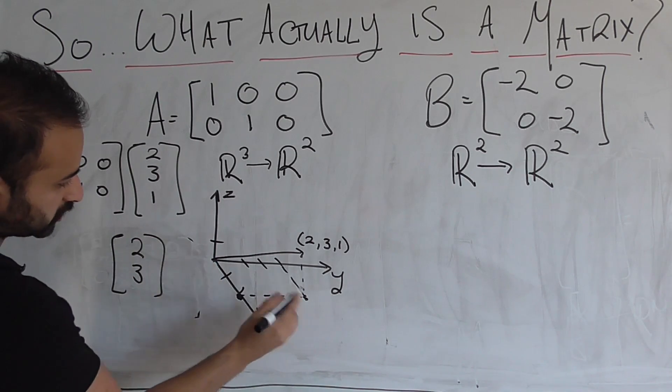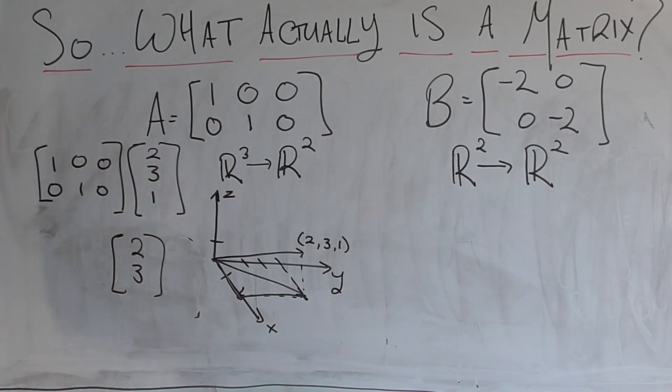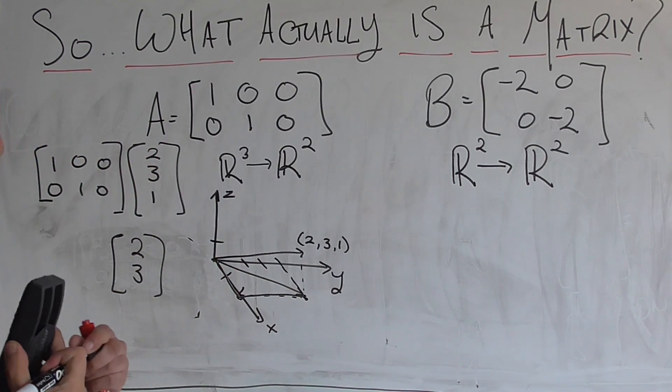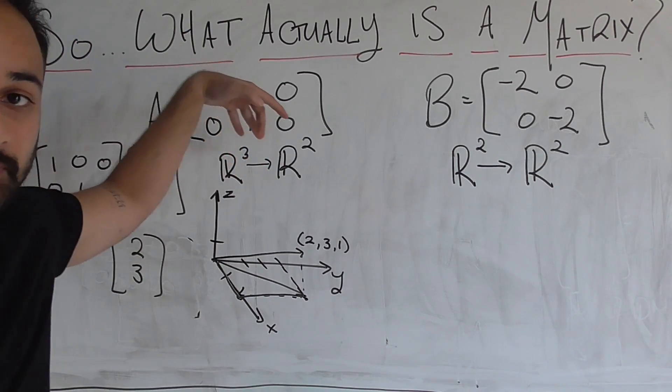So we get the result as two comma three. And how do we see that on this plane? So that's basically two comma three, like right there. So if it wasn't already clear, what this transformation is doing is, the best way to imagine it is, let's say there's a light source coming from above on the three-dimensional plane.